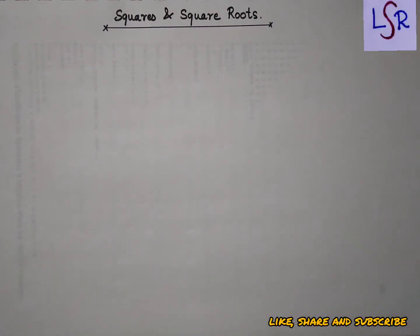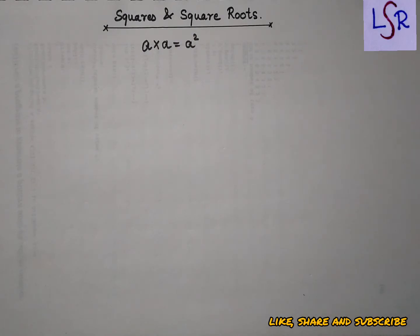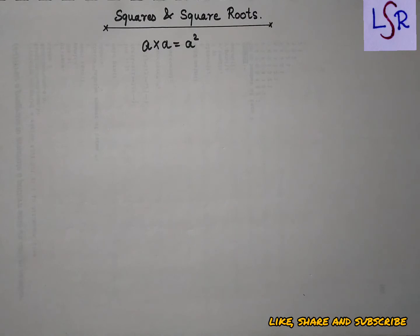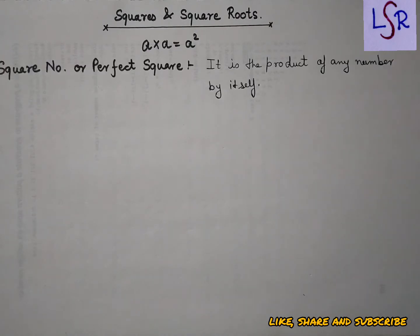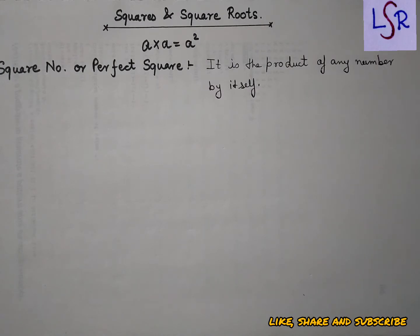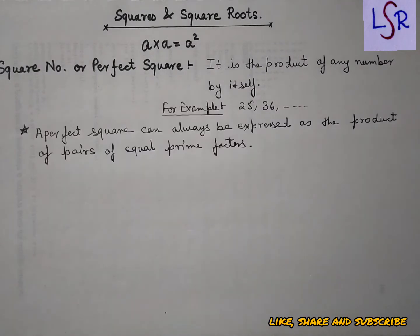Hello everyone, here we begin with a new chapter on squares and square roots. A square number is obtained when we multiply a number by itself — that is, if any number has a power of 2 or has been multiplied two times, it is known as the square of that number. A perfect square is the product of any number by itself, and it can be represented by the product of pairs of equal prime factors. Examples of perfect squares are 25, 36, and so on.